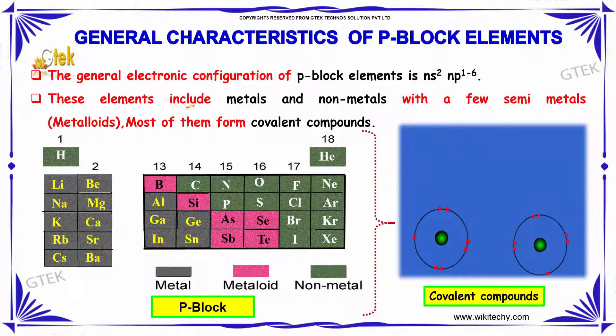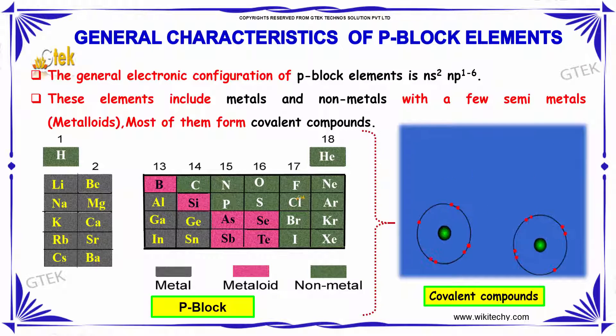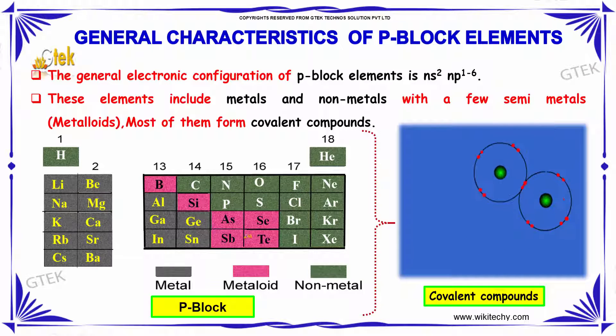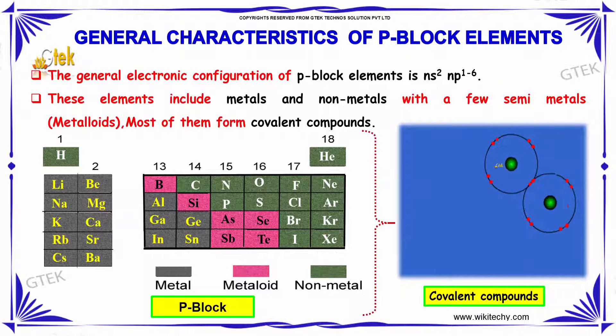So, these elements include metals, non-metals with a few semi-metals or metalloids. Most of them form covalent compounds.